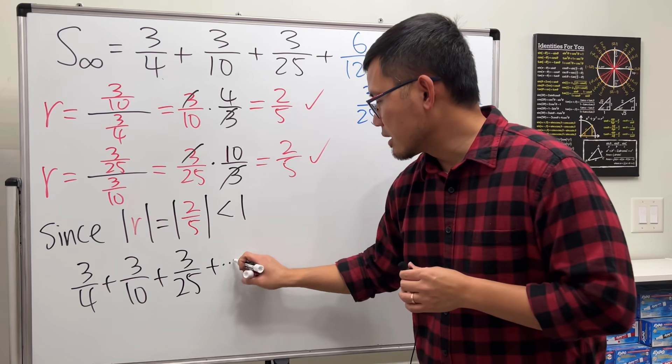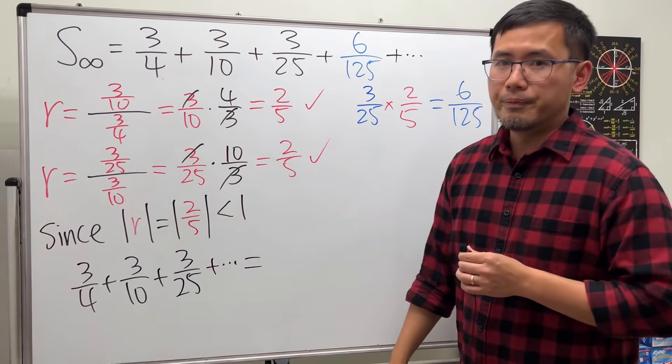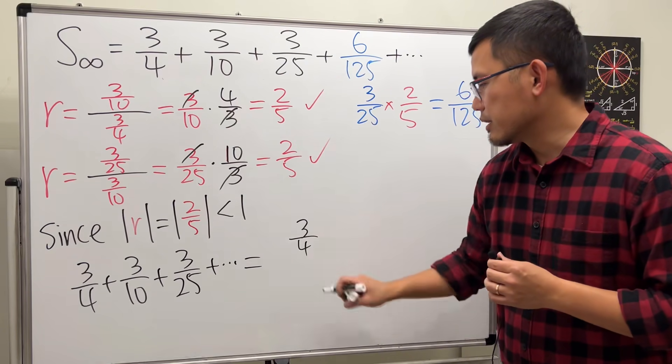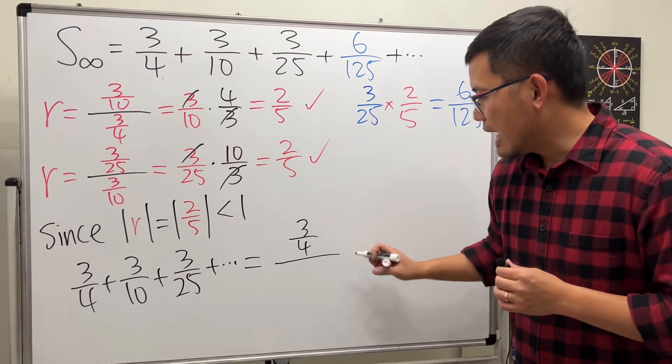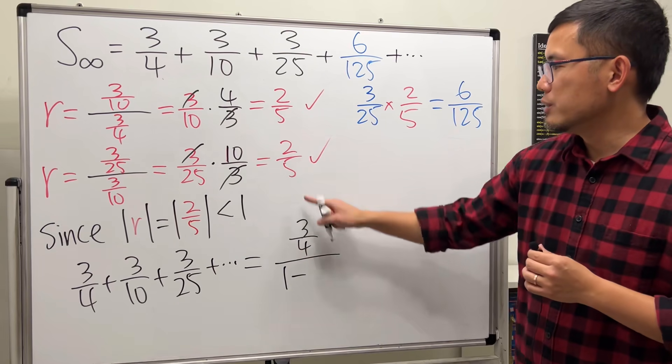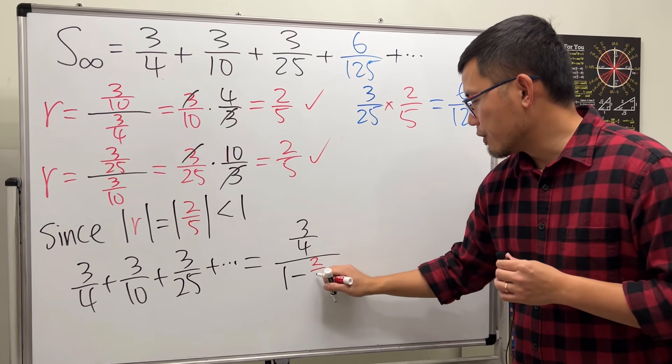This is equal to... you start with the first term, which is 3 over 4, do it on the top, divided by 1 minus the common ratio, which is 2 over 5.